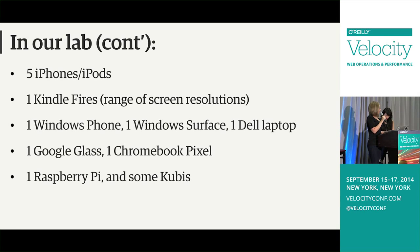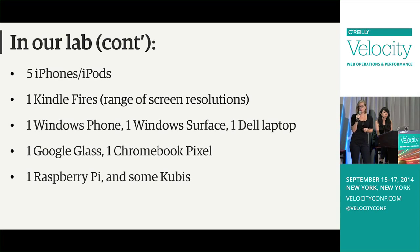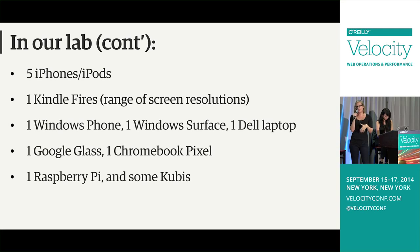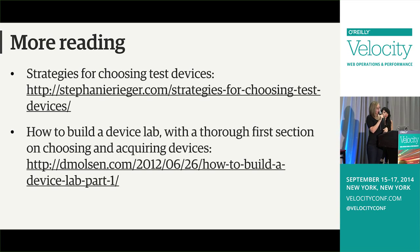We also have a Google Glass and a Chromebook Pixel — mostly for the shine factor. People like to walk up and check out the Google Glass. We also have a Raspberry Pi and some Kubis. A Kubi is a cool little robot that can hold an iPad and helps our remote employees check out our offices and hang out with us virtually. You can go to lauraswanson.com/devicelab to see links to articles that also talk about how to choose additional test devices.